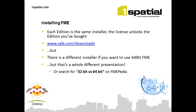Installing FME uses the same installer — it doesn't matter what edition you've bought; you download the same installer from safe.com/downloads. The license file that you get issued is the file that unlocks the edition you've bought. The only thing to be aware of is that if you want to use 64-bit FME, that is a separate installer. There's a very useful page on FMEpedia — if you search for 32-bit versus 64-bit, you'll find an article that gives you the pros and cons of the two versions.